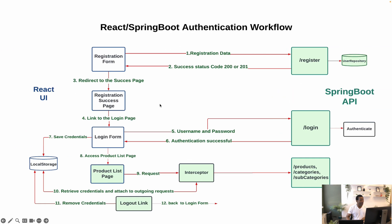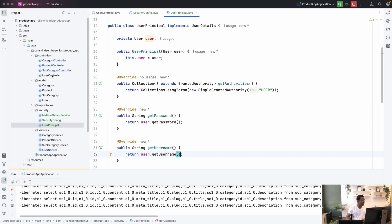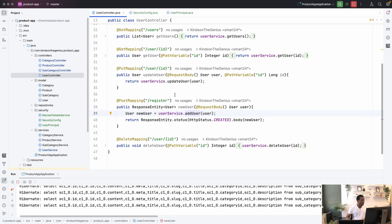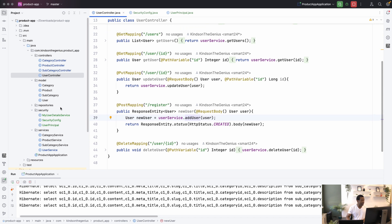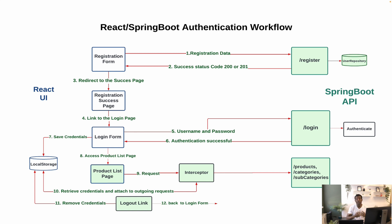We don't have the login endpoint yet. The login takes the username and password and checks them by querying the database to see whether this user exists. This happens in the authenticate service or authenticate function. It checks the database for the username and password, and if found, it returns authentication successful — which may just be a boolean. You can also save the user data in this section.